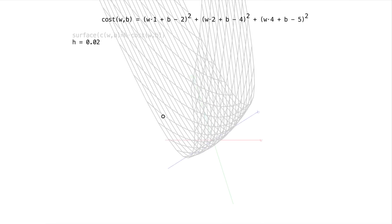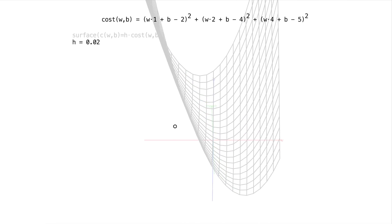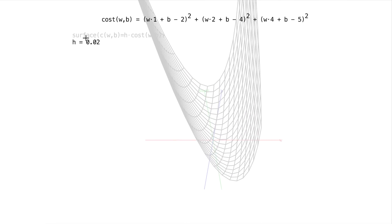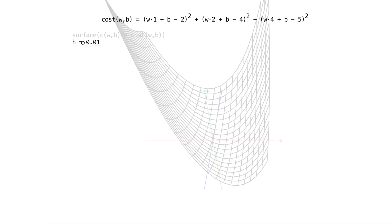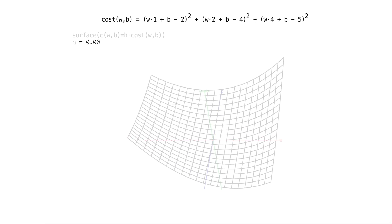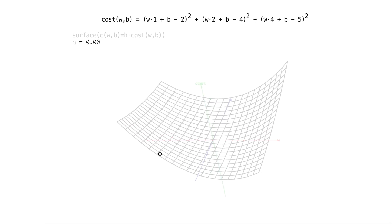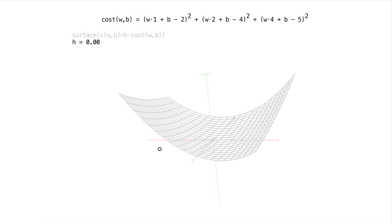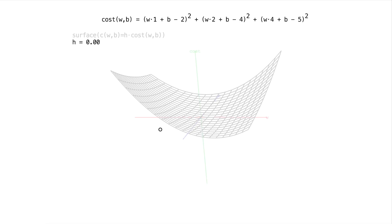So there is a minimum point on this surface, and that minimum point represents the settings of w and b that lead to the lowest possible cost that we can get. So let's see how to find that minimum point.